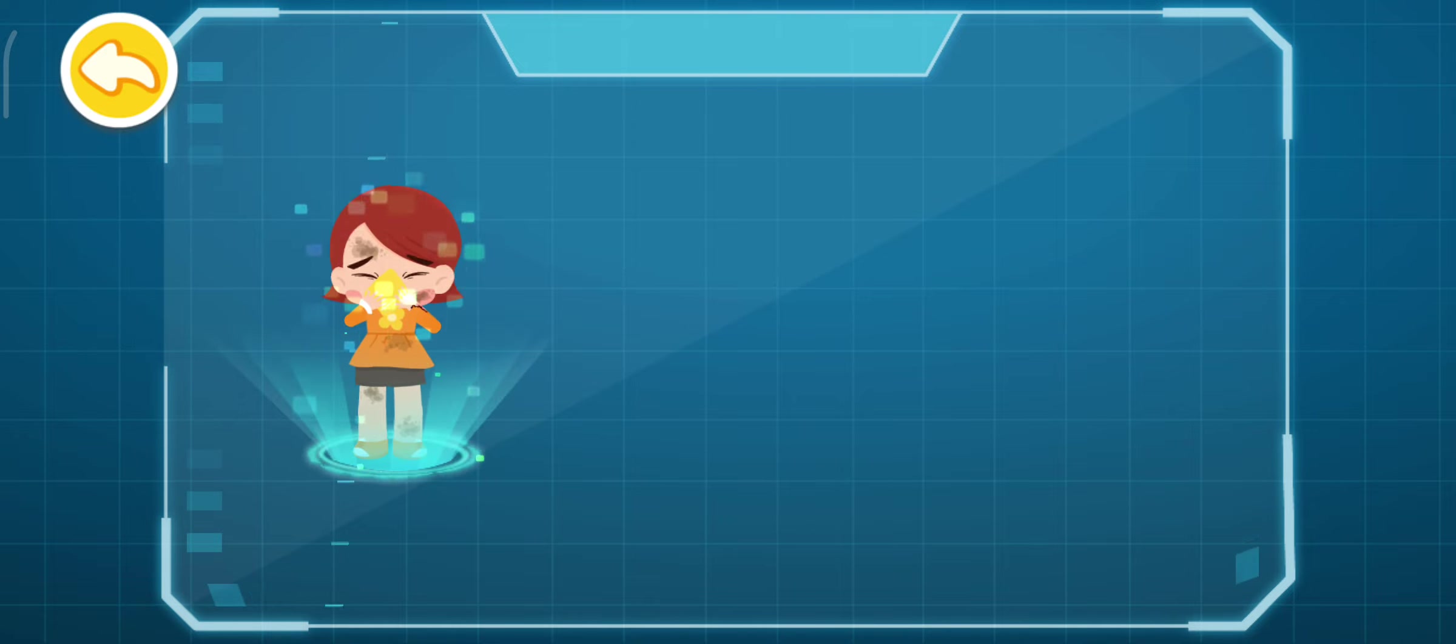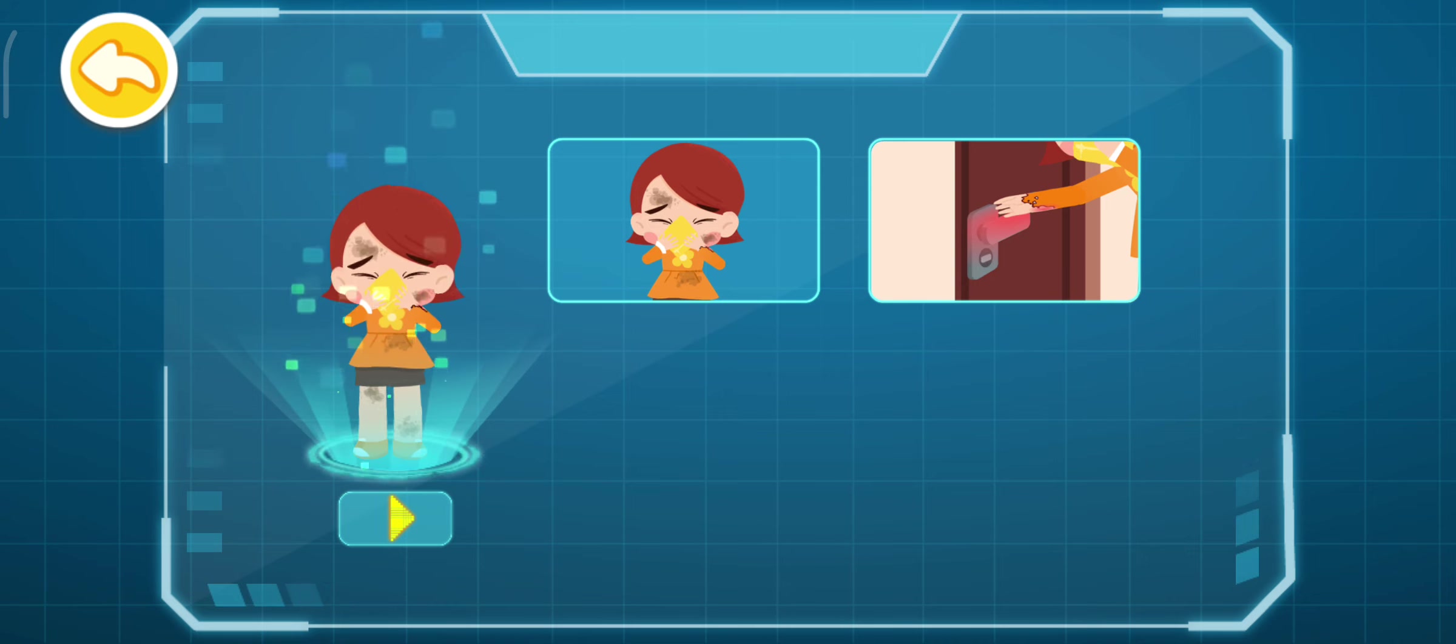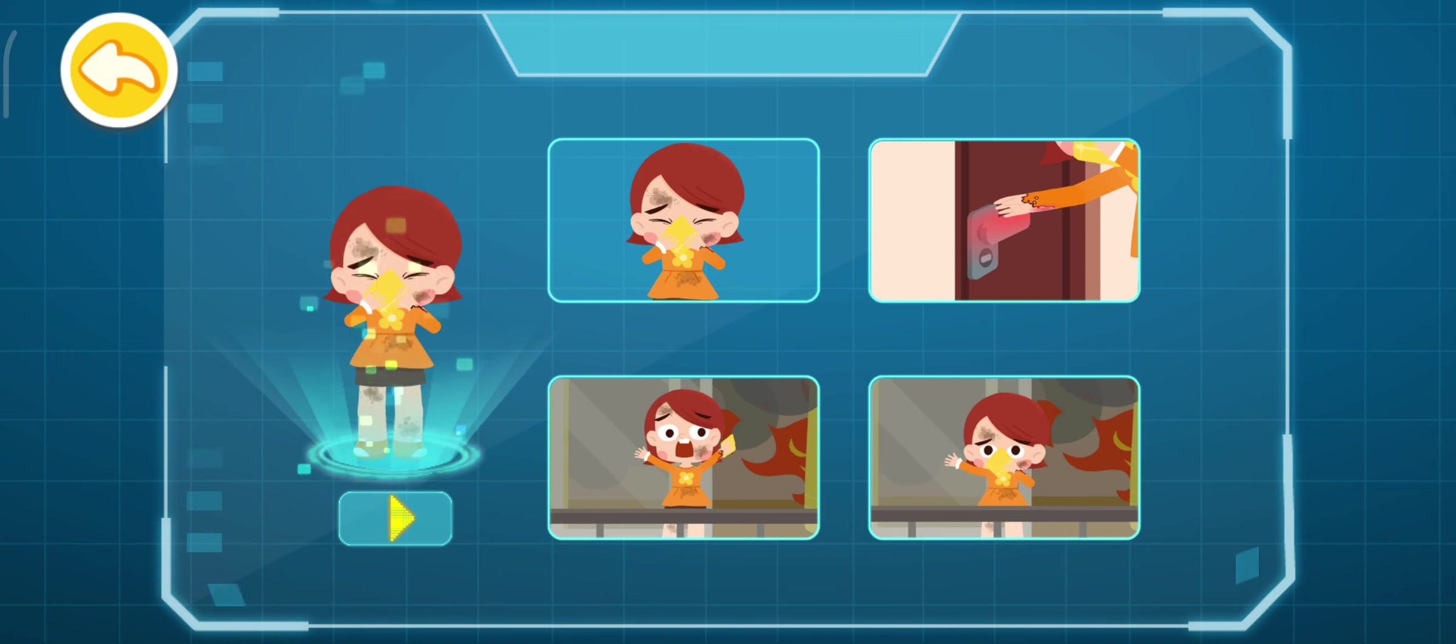How should we perform self-rescue when the fire breaks out? Let's review. 1. Cover your nose and mouth with a wet towel. 2. Keep the door shut if it's burning hot. 3. Call for help from balconies or windows. 4. Stay calm and wait for rescue.